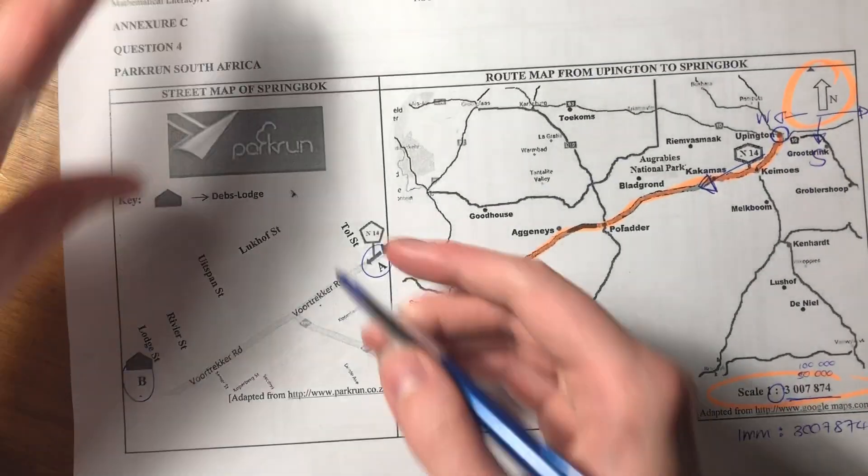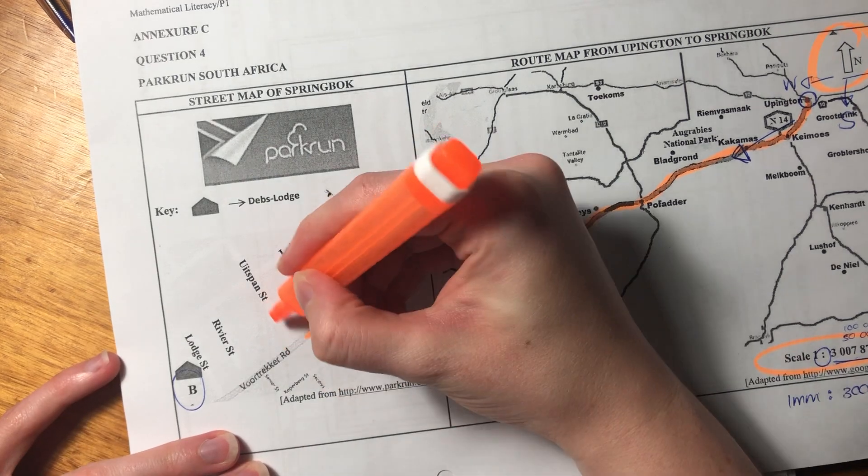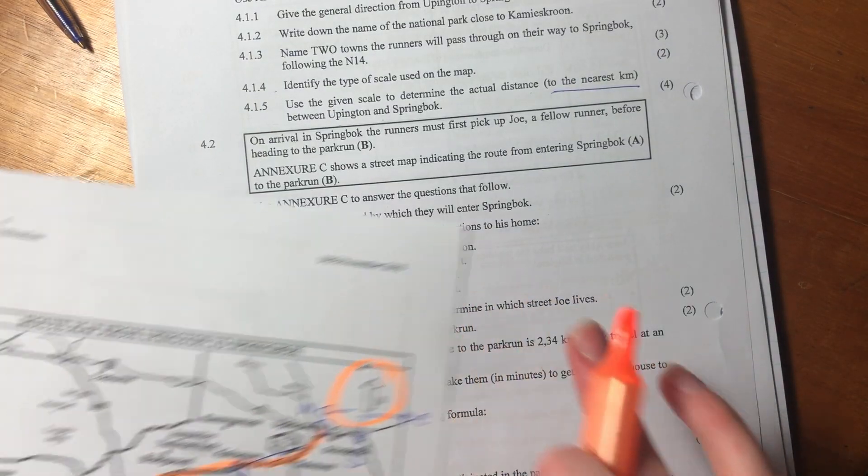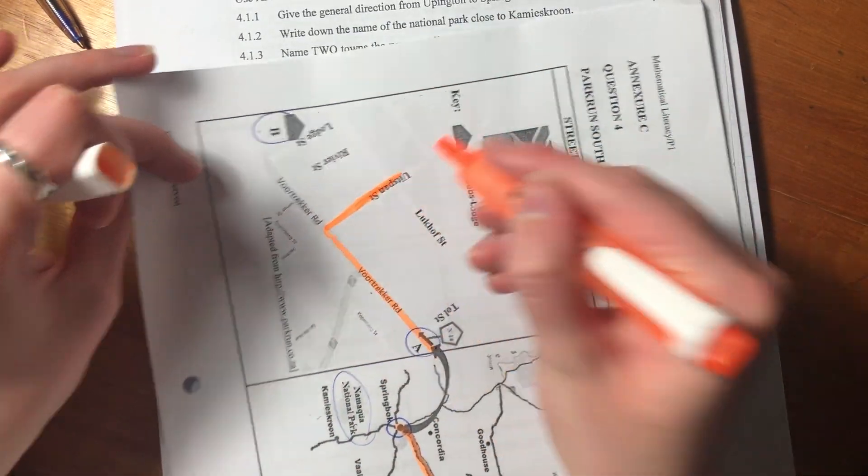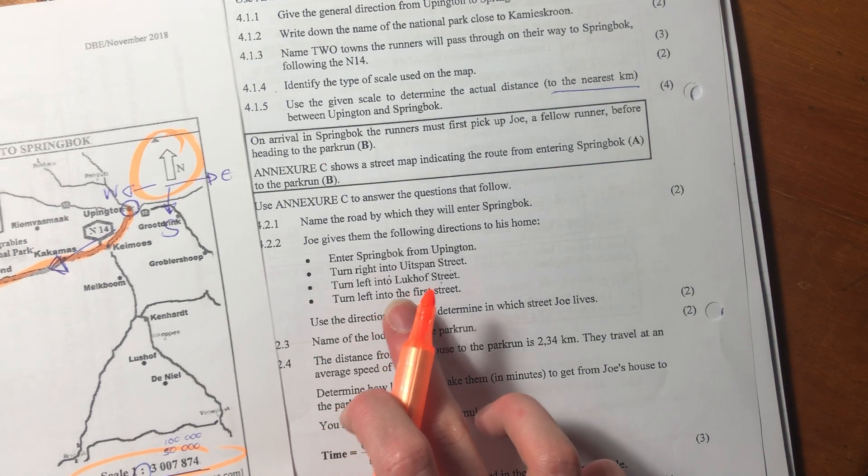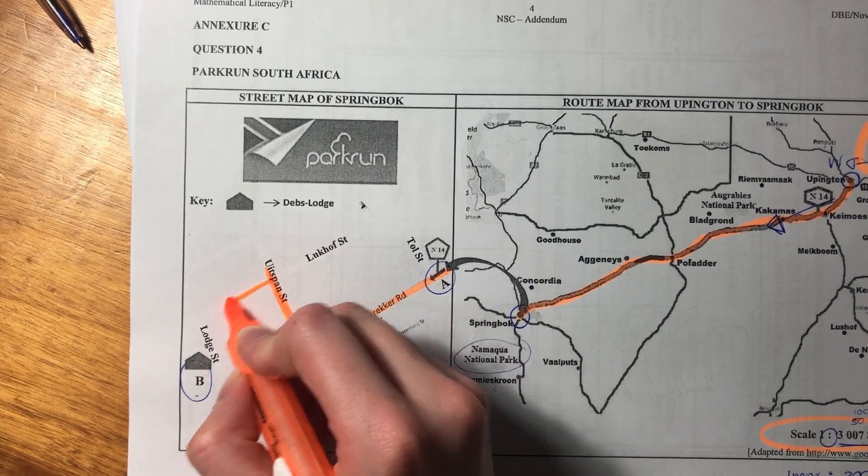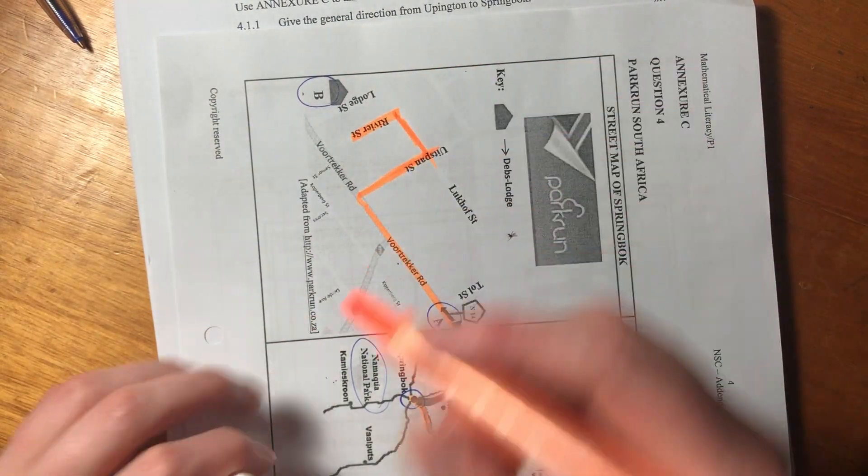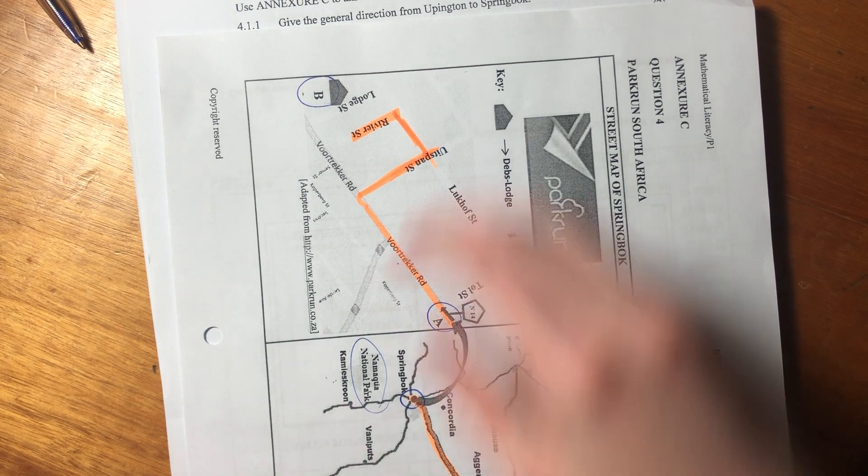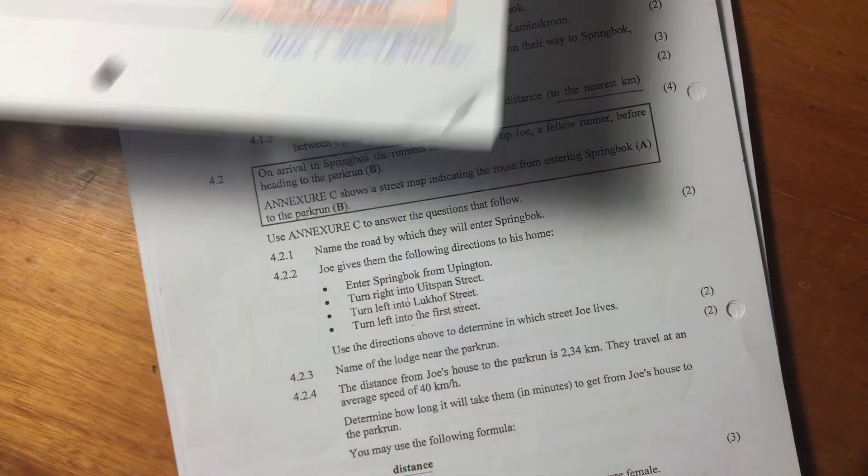So we have to, let's use a nice little color. So they go here. Then it says, Eitspan. Eitspan was the first one. It says, turn right into Eitspan. So if they're driving this way, right would be into Eitspan. It would be this way. Then it says, turn left into Likhof. So if they're here, left would be over here. And then it says, turn left into the first street. So if they're here, the first street would be Refere Street. I think that's correct. Let's just check. I think it would be Refere Street. Yes.